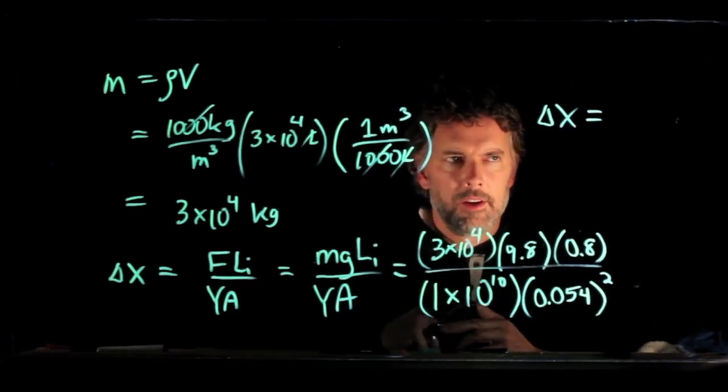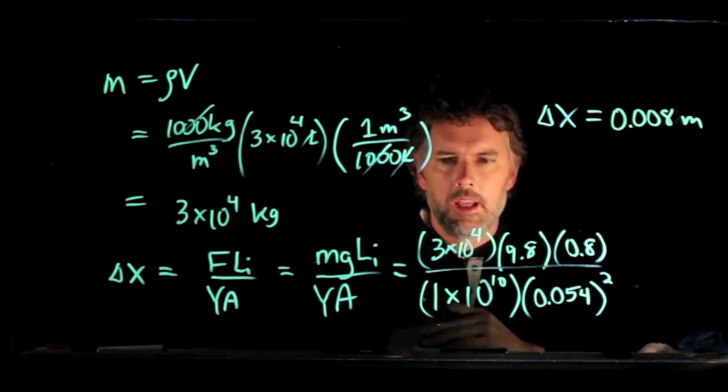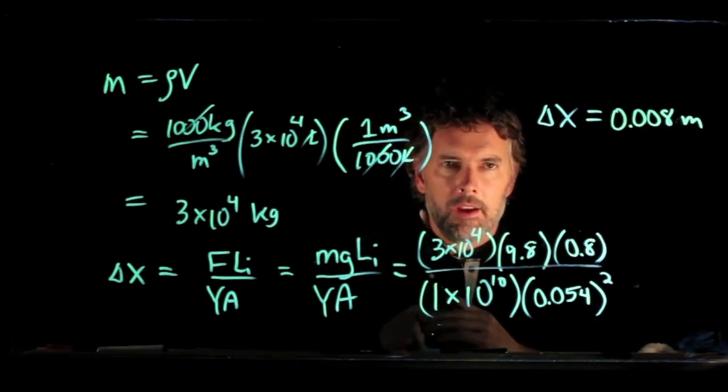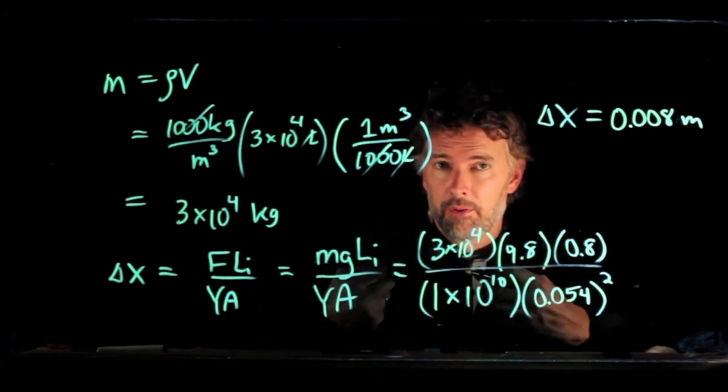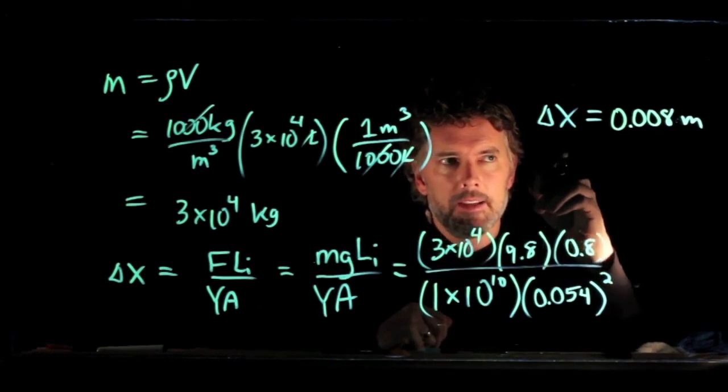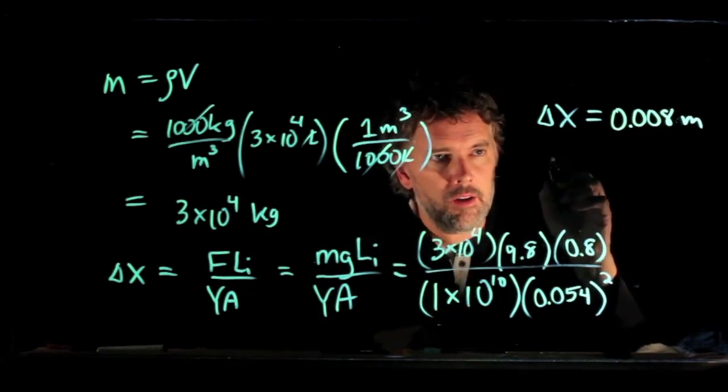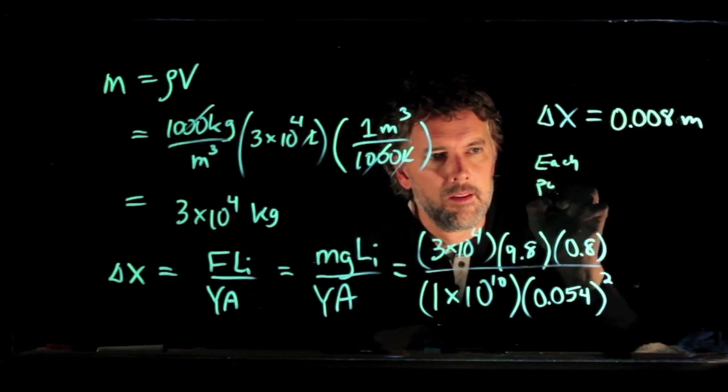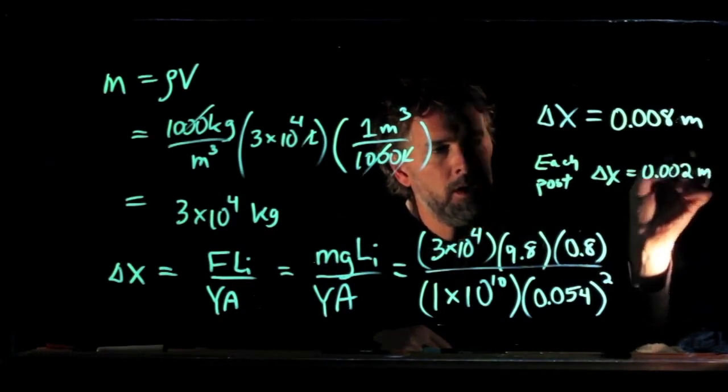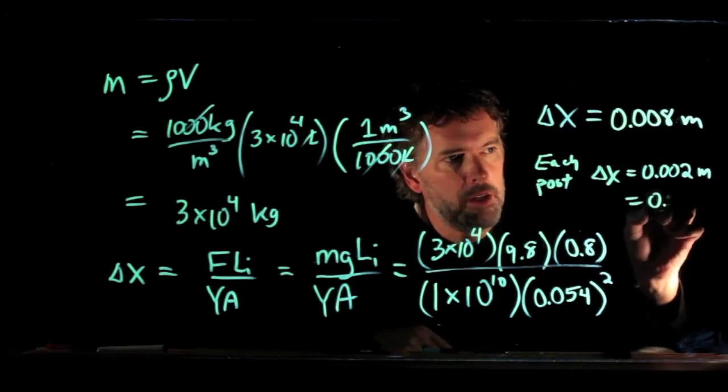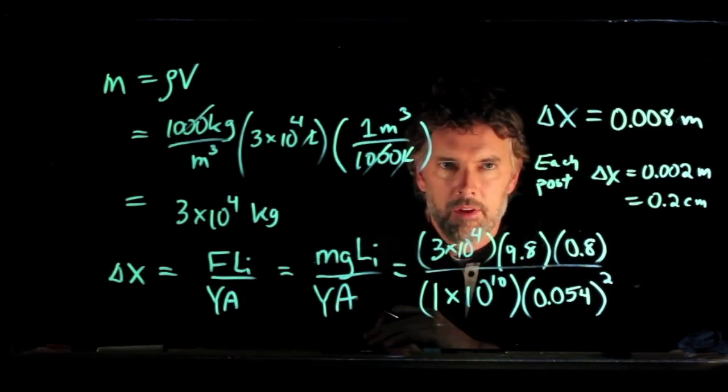So if you plug those numbers into your calculator, what you should get is 0.008. And the units are still SI, so it's meters. Now, we're forgetting one important part of this whole problem, which was there were four posts underneath the aquarium. So we have calculated delta x if it was just one post underneath the aquarium. And so you have to divide by a factor of four. So each post will contract by a delta x of 0.002 meters, which is 0.2 centimeters. All right, give that one a shot. If you have any questions, come see me in my office hours. Cheers.